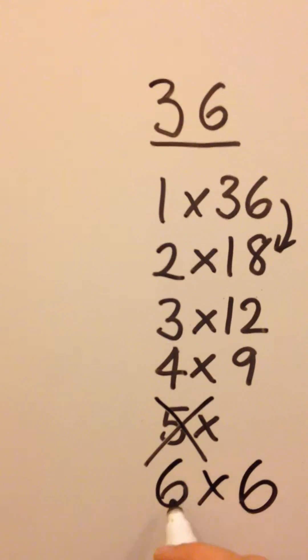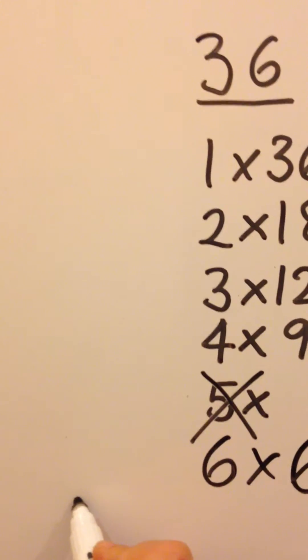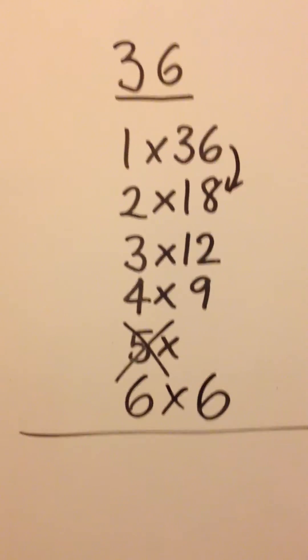If you end up with a square number at the bottom, then you strike a line, you've finished.